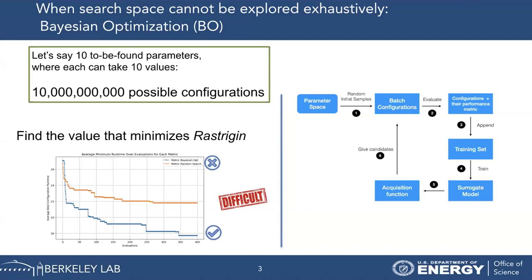There are different search approaches. One is random search, where we randomly evaluate configurations until we find a good one. However, the most promising approach nowadays is Bayesian optimization. In the graph, we can see the evolution of the best runtime found by random search in orange and by Bayesian optimization in blue, and we can see how Bayesian optimization clearly outperforms random search.